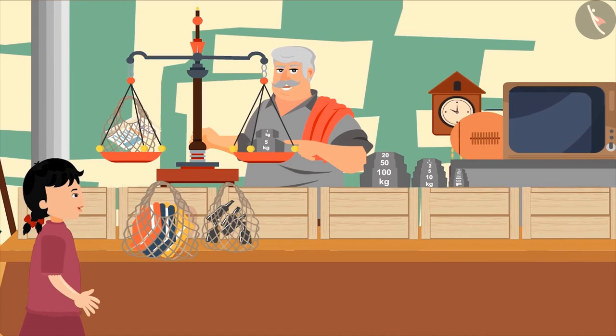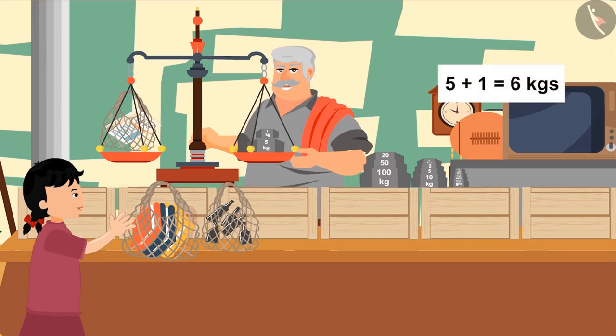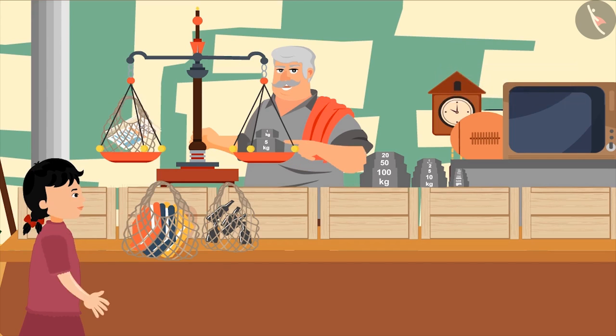Uncle, look. Now the sides are balanced and the needle also points at the center. That means, the weight of the newspapers is 5 and 1 means 6 kgs. Very good.